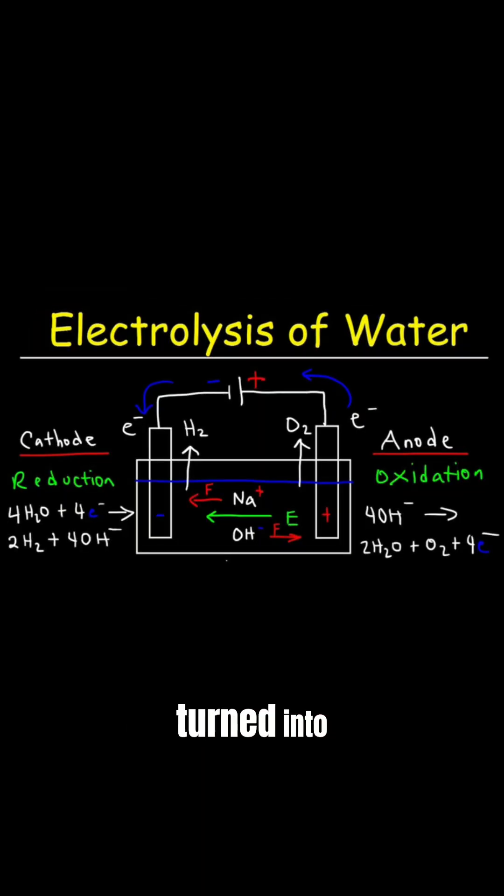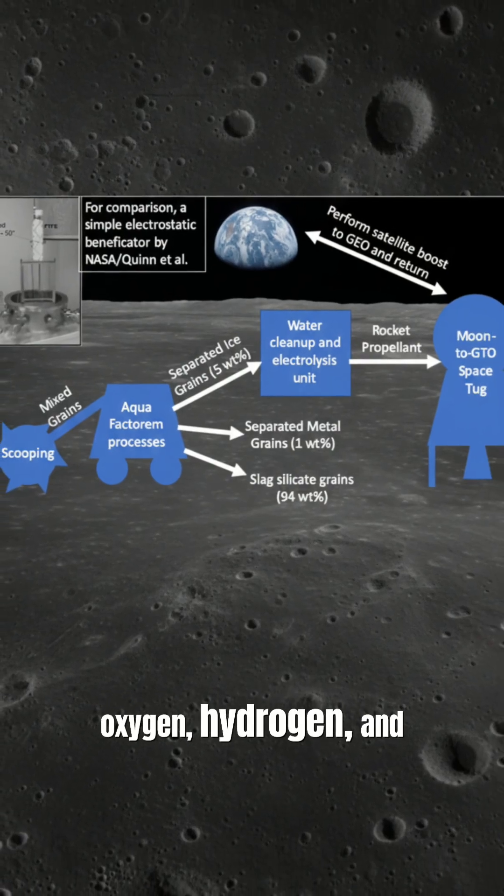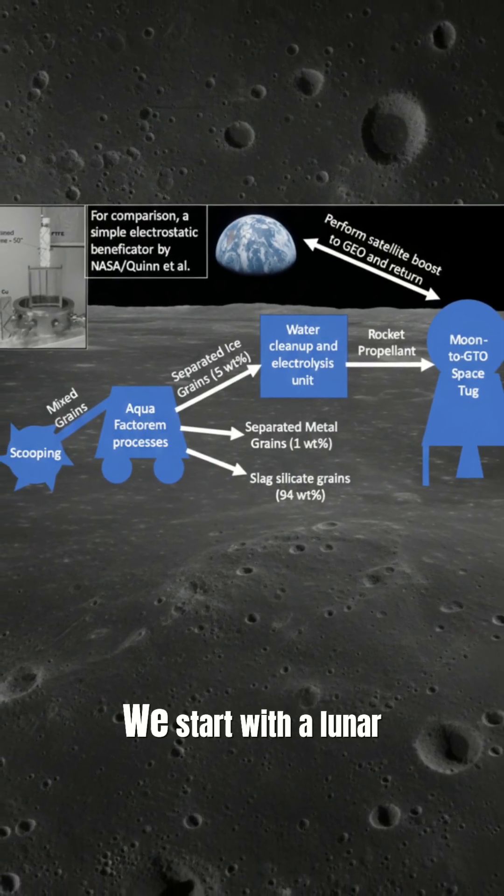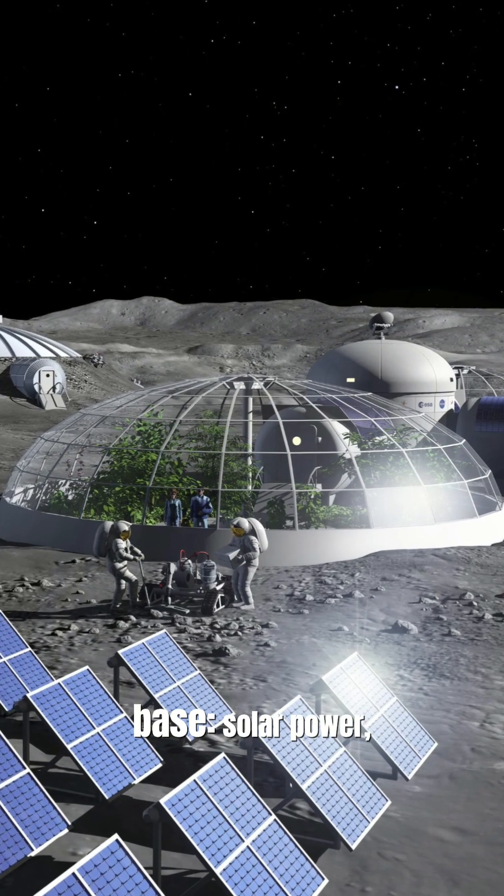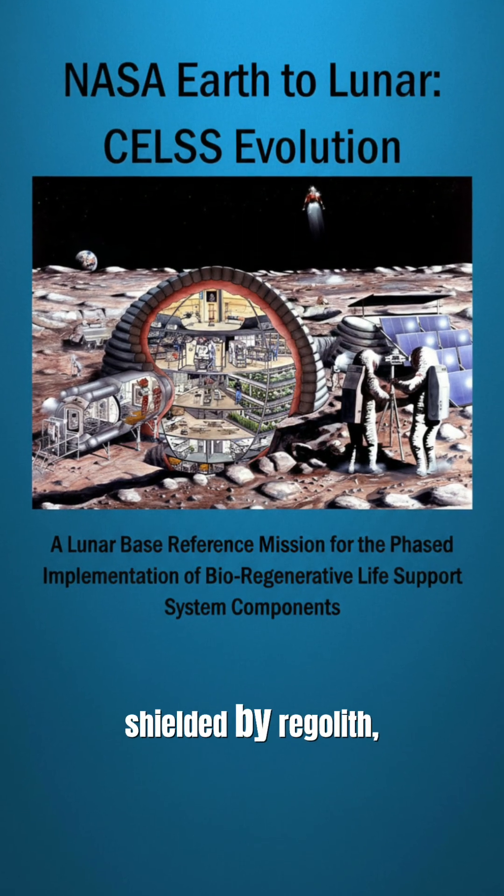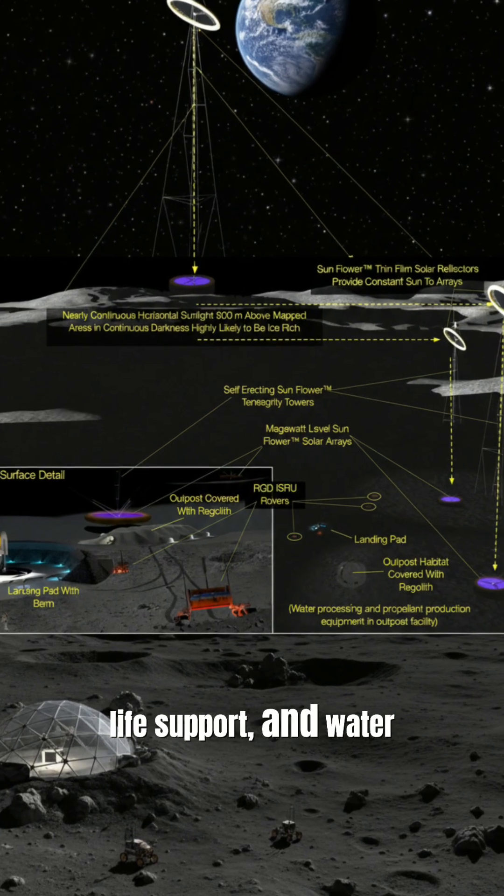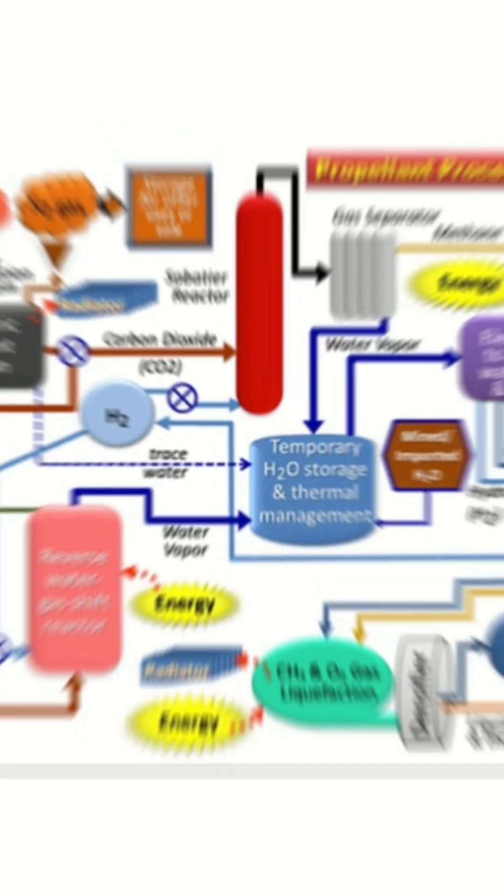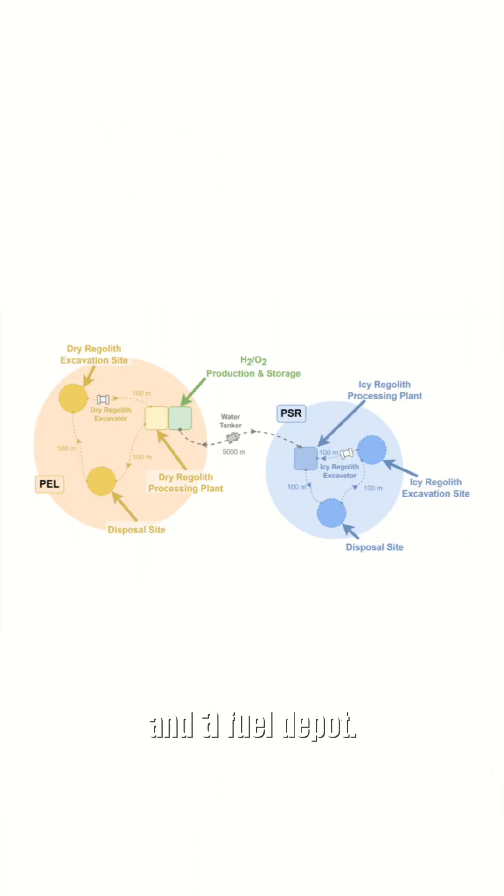Its water ice can be turned into oxygen, hydrogen and rocket fuel. We start with a lunar base, solar power, batteries or nuclear reactors, habitat modules shielded by regolith, life support and water mining. Then we add local manufacturing and a fuel depot.